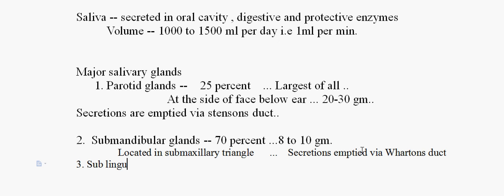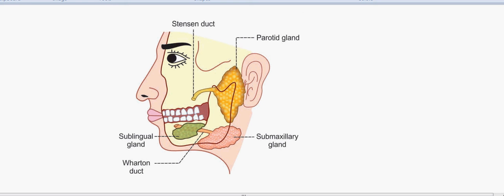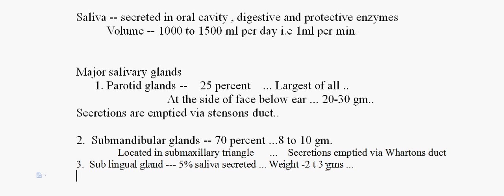The third major salivary gland is the sublingual gland. It secretes 5% of the total saliva and weighs around 2 to 3 grams, making it the smallest among the major salivary glands. It is situated at the mucosal floor of the mouth, as seen in the picture.